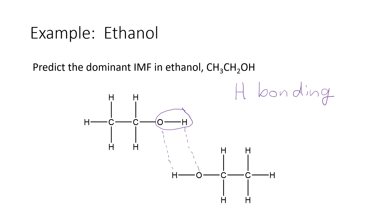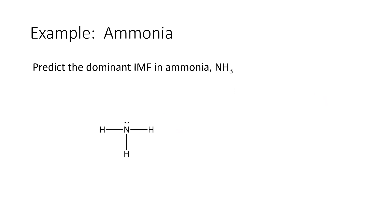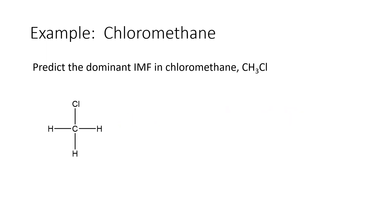In our next example, ammonia, we again start with the strongest — hydrogen bonding — and ask: does this molecule contain a hydrogen atom bonded to a nitrogen, oxygen, or fluorine? The answer is yes; we have that grouping right here, and actually all three bonds are that type. So the dominant intermolecular force in ammonia is hydrogen bonding as well.